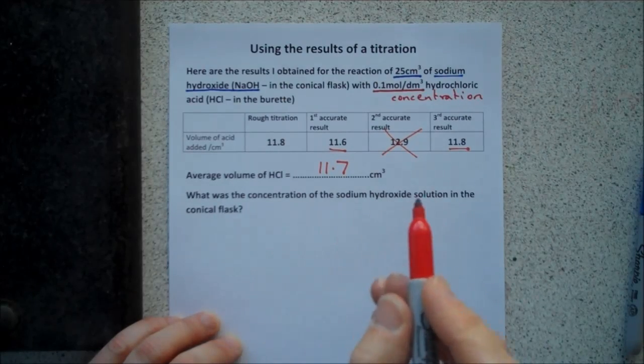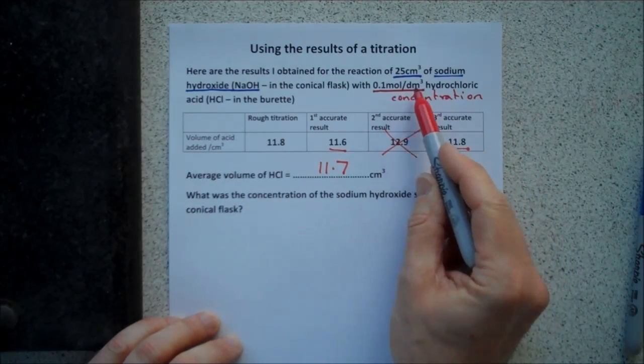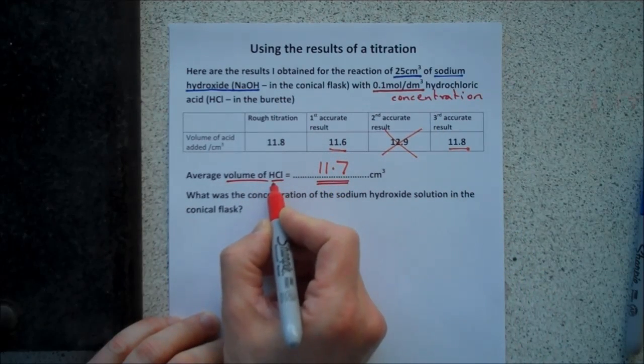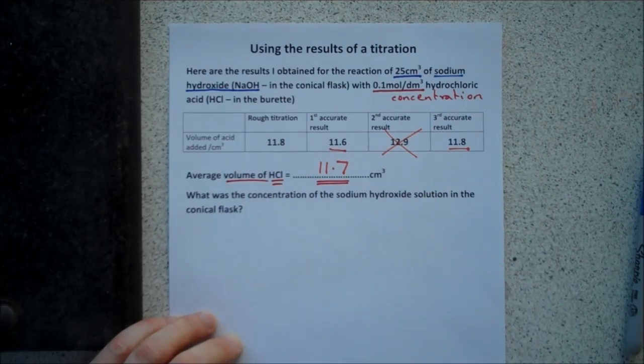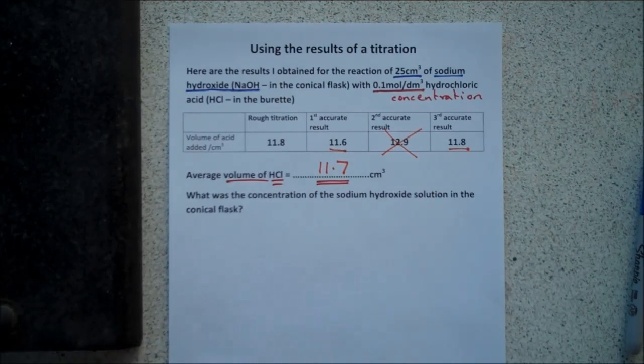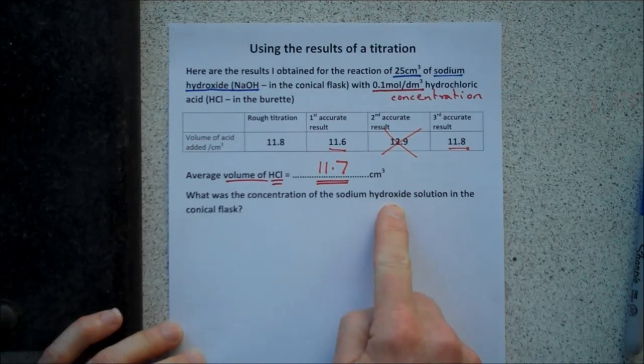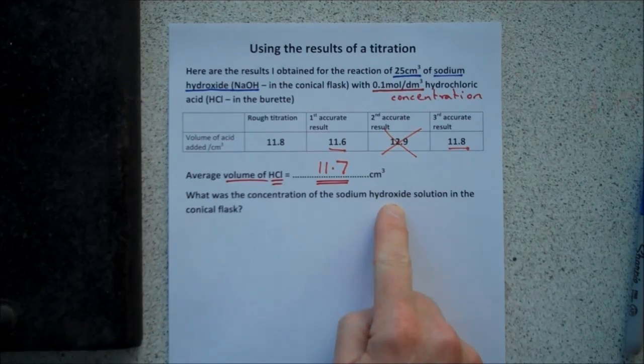So, we also know the hydrochloric acid's volume, 11.7 centimetres cubed. So, we know the volume and the concentration of hydrochloric acid. But the question asks us, what was the concentration of sodium hydroxide? Now, we can't work that out yet.